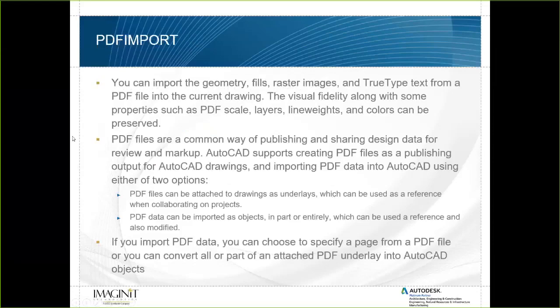PDF import is the one I get the most support calls about. The PDF import command lets you import geometry, fills, raster images, and TrueType text from a PDF into the current drawing. Visual fidelity along with properties such as scale, layers, line weights, and colors can be preserved. PDFs are a common way to share design data, and AutoCAD supports creating PDFs as plotting output. We can reimport that data using two options: attach as an underlay (similar to an XREF) or import as objects. Regarding the question about editing hatch vertices — yes, if the hatch has an associative boundary and you add a vertex and stretch it out, it will update, unless ray casting doesn't work.